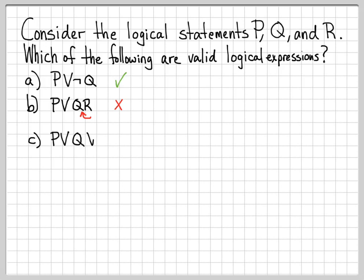What about part C? We have 'P or Q or R.' Is that a valid logical statement? And obviously it is. We have a logical connective between each of our logical statements P, Q, and R, so that's a totally fine thing to write down.